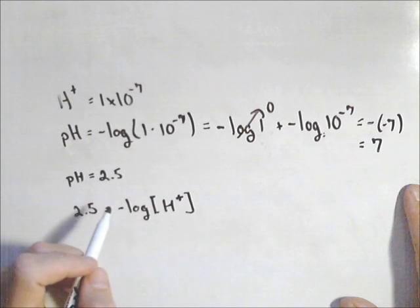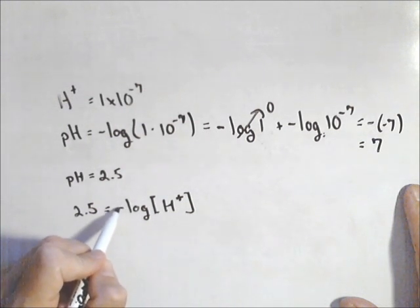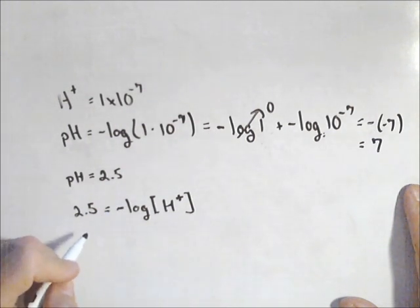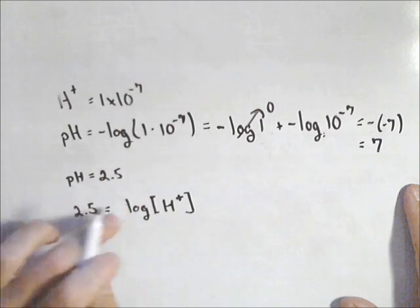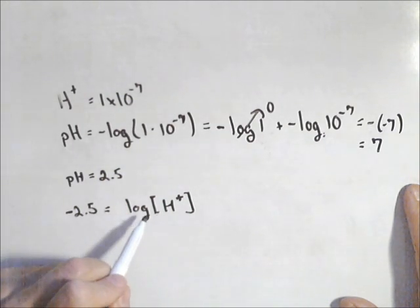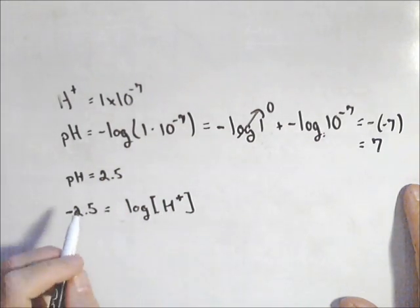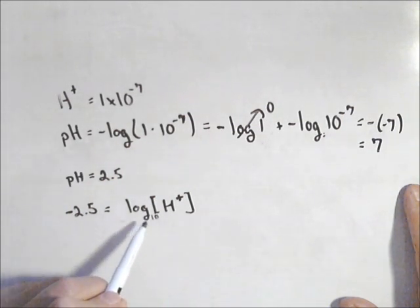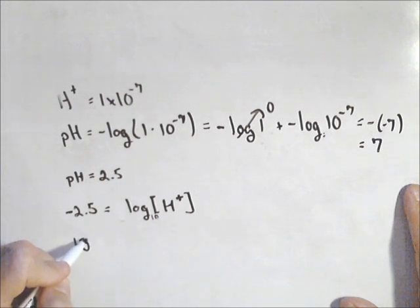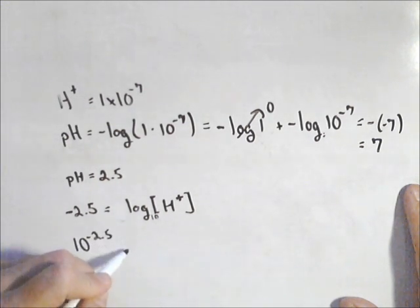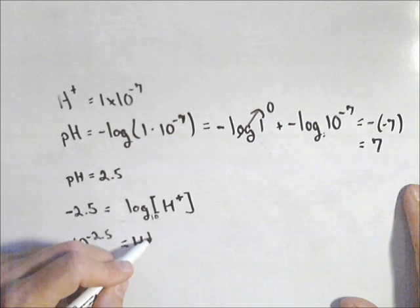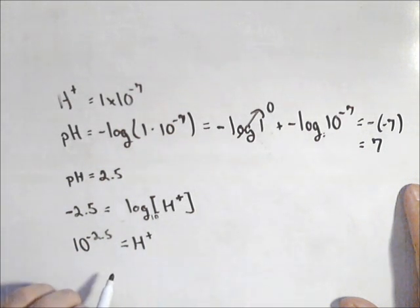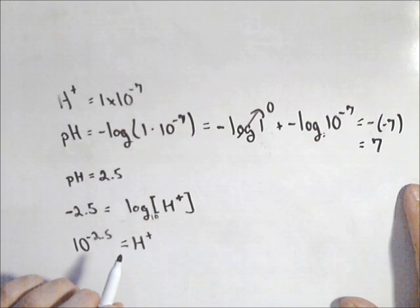First thing we want to do is move this negative over, we want to isolate the log. So we're going to move the negative to the other side, so log(H+) = -2.5. No base, remember it's automatically base 10. So 10^-2.5 = H+, and there's our hydrogen ion concentration: 10^-2.5 moles per liter.